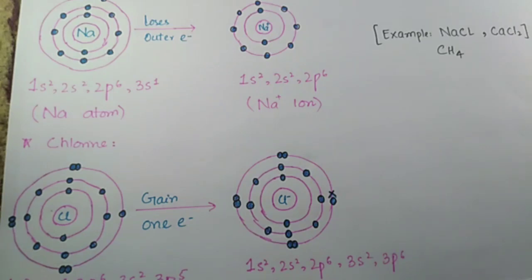For covalent compounds, carbon has four electrons in its outermost shell. Hydrogen and carbon share electrons. Four hydrogen atoms, which means four electrons from hydrogen plus four of carbon equals eight, and the octet of carbon is complete.